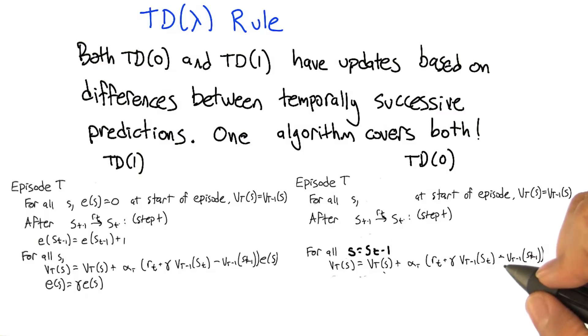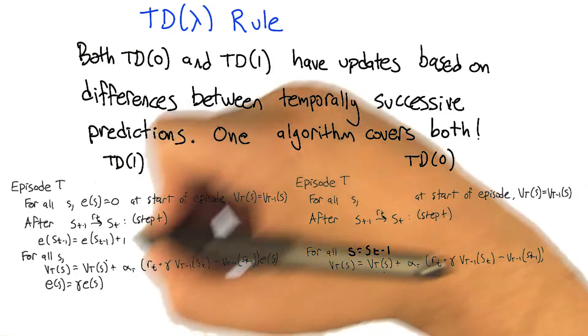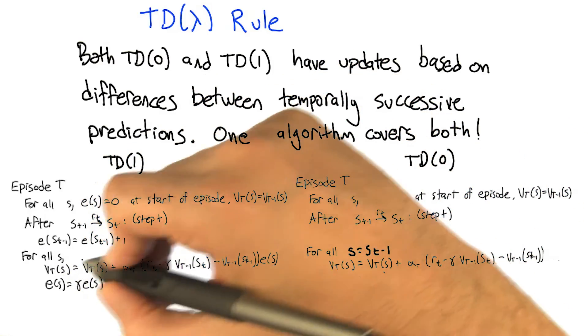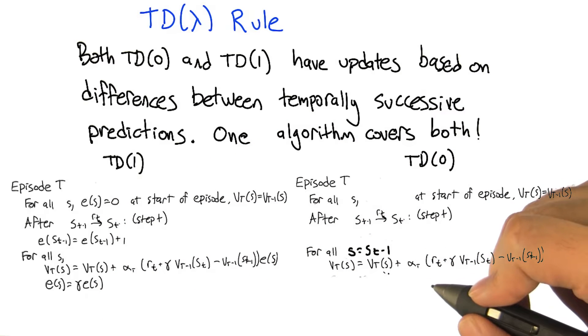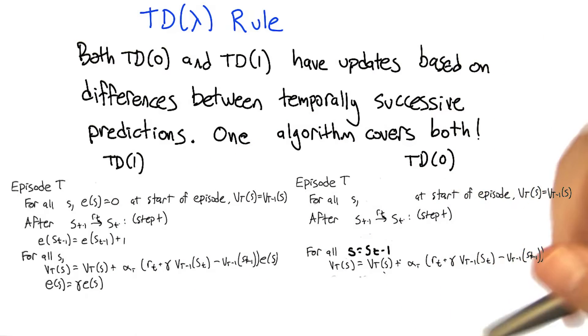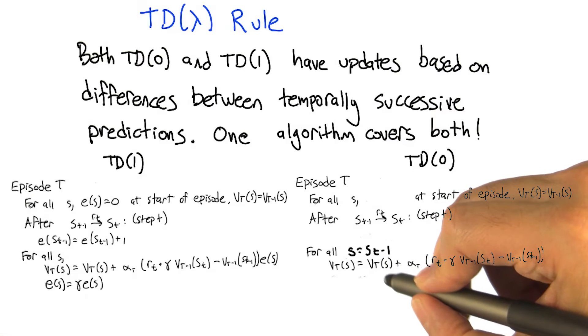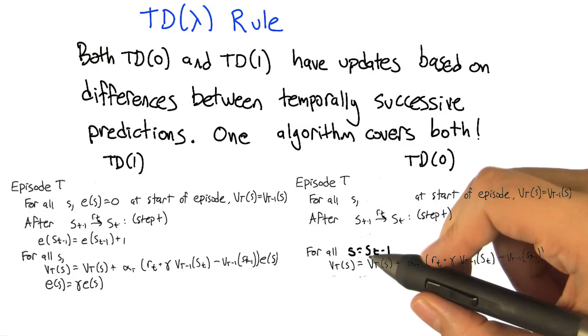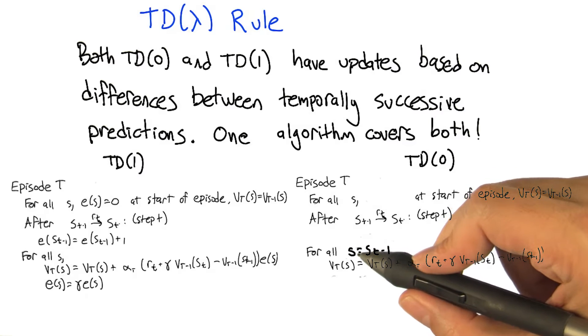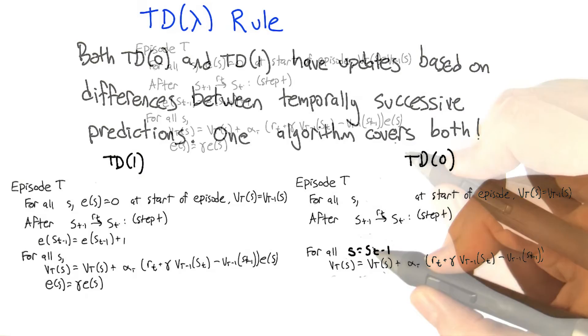And the only other difference, other than just getting rid of all references to the eligibility trace, is where, as in TD(1), we do this update over all states. In TD(0), we just update the state that we left most recently. So I changed that loop. Instead of making it a loop, it actually is, it just says for all s equal to s_t minus 1. In other words, we're just going to do this update for s equal to s_t minus 1.